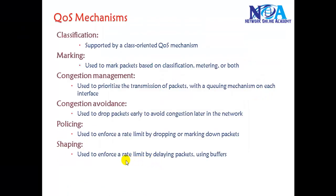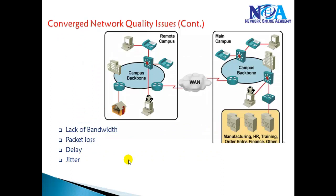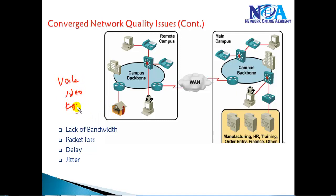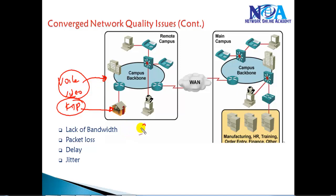In this video we'll talk about some of the QoS mechanisms which can be used to overcome network issues. When you are working in a converged network you have voice traffic, video traffic, and maybe FTP traffic. There is a possibility that FTP traffic may utilize almost all the bandwidth available, and your voice traffic may get delayed or dropped — and that's something we don't want. To overcome these things we can implement QoS mechanisms which will ensure we give priority to specific types of traffic.